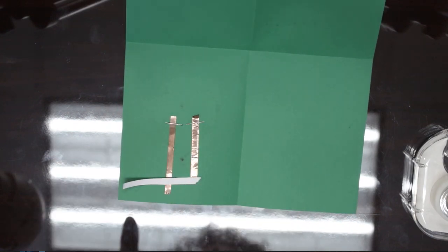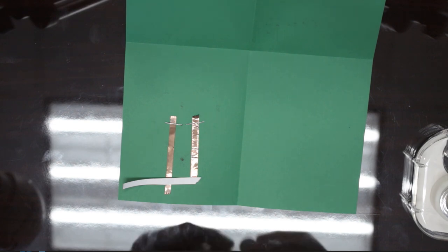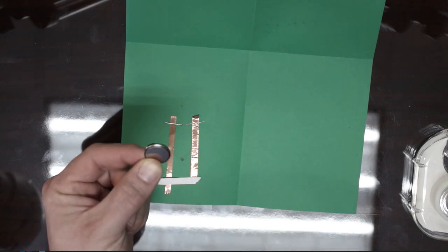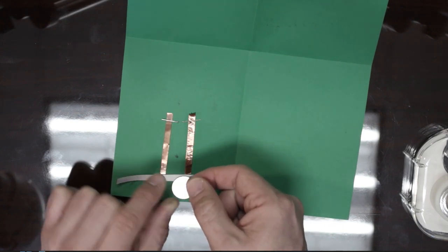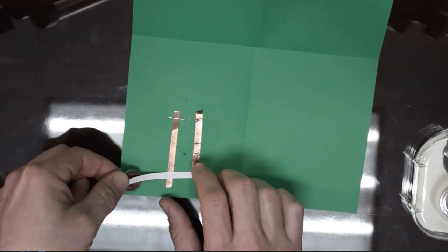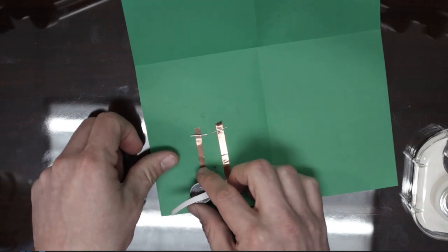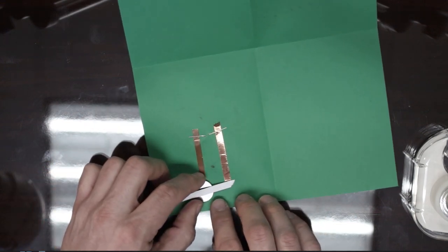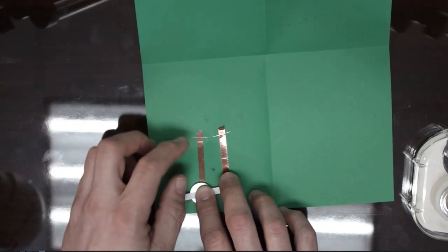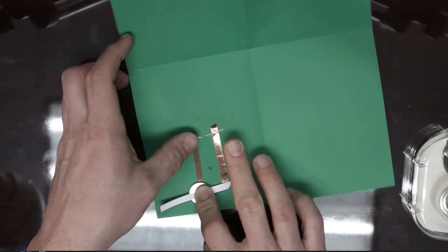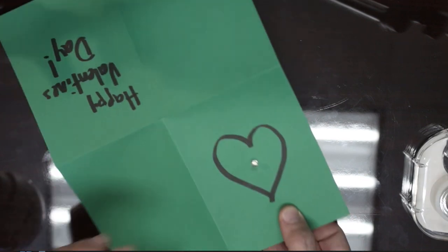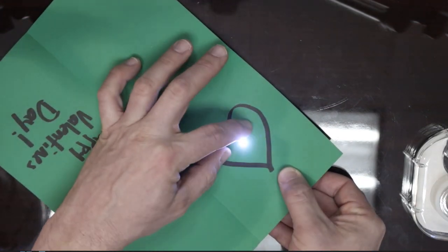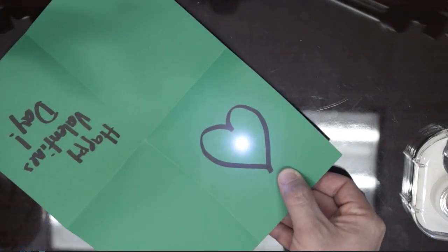Now we're ready for testing. I would take my battery. Remember, the positive side is right here, so it needs to touch this conductor. I'm going to slide my battery in there with the positive side up. I should see my light bulb light up just like that. We know it's working.